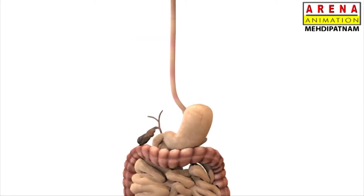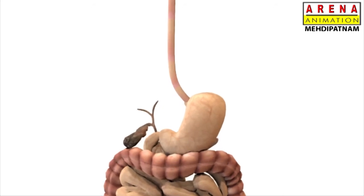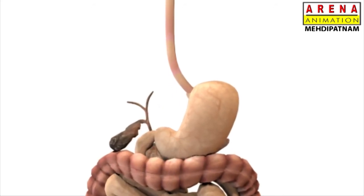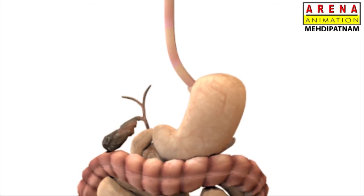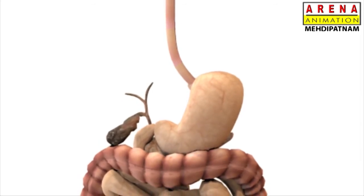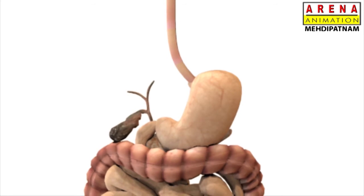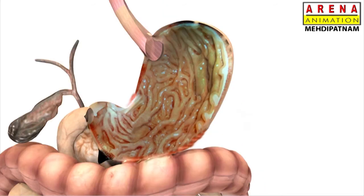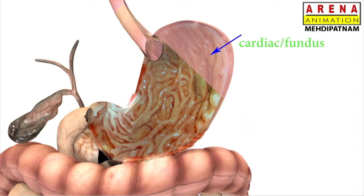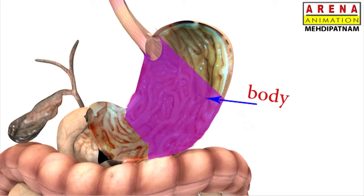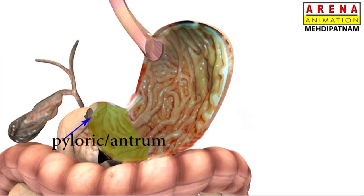The stomach is a large, muscular, and somewhat J-shaped organ. It occupies the left side of the upper part of the abdominal cavity. The upper part is called the cardiac or fundus, the middle dome-shaped part is the body, and the distal part is called the pyloric or antrum.